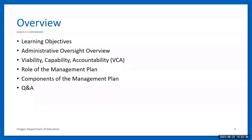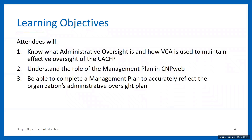As you think of questions, go ahead and type them into the chat box and send it to everybody or to Darcy Miller directly. Darcy will be tracking the questions, and we'll have time to go over them at the end of the session. If we do not get to your questions today, your Science Specialist will contact you after the webinar. Here are our three learning objectives: know what administrative oversight is and how VCA is used; understand the role of the management plan in CNP Web; and be able to complete a management plan to accurately reflect the organization's administrative oversight plan.